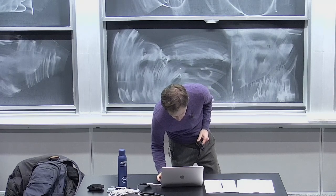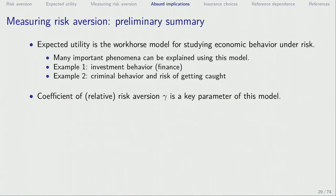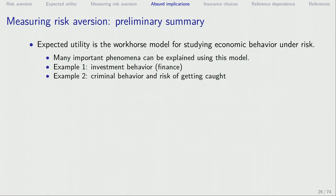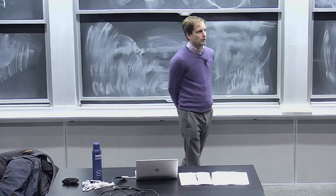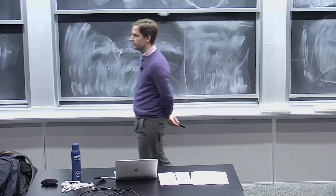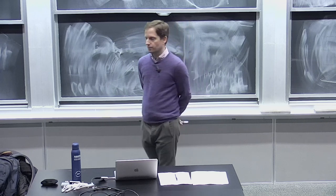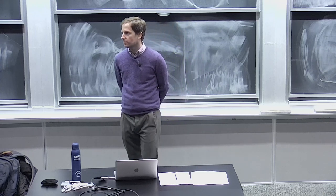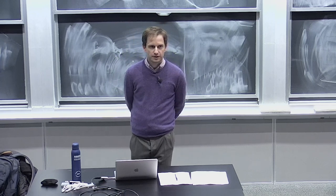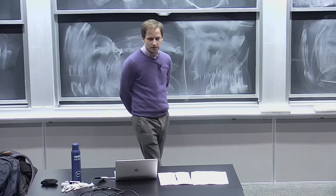Let me very briefly recap what we discussed last time. We started off thinking about choices under risk — how do people think about economic behavior when things are uncertain, when there's risk involved? I discussed and showed you the main workhorse model that economists use to study risk: expected utility. That is a very commonly used and extremely useful model for many situations, and it's very widely used.